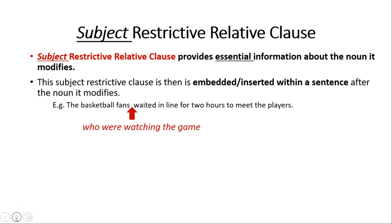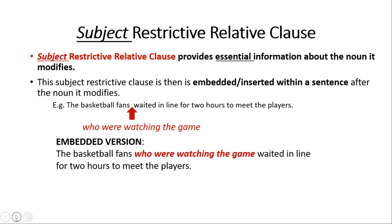After thinking about it, I came up with 'who were watching the game.' The embedded version becomes: 'The basketball fans who were watching the game waited in line for two hours to meet the players.' This is restrictive because I'm only limiting it to the basketball fans who were watching the game — they were the ones who waited in line. So who becomes the new subject in the restrictive relative clause, referring back to the original subject, the basketball fans.